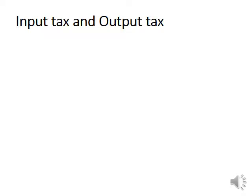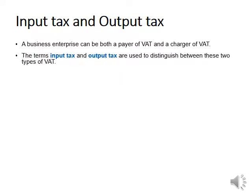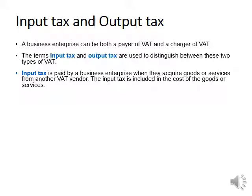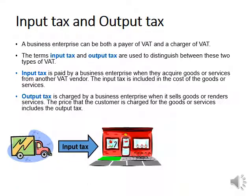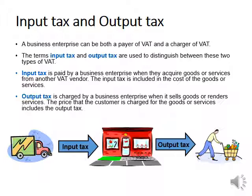That brings us to input tax and output tax. A business enterprise can be both a payer of VAT and a charger of VAT — you pay VAT when you purchase goods and charge VAT when you sell them. Input tax is paid by the business enterprise when they acquire goods or services, and it is included in the cost of those goods or services. Output tax is charged by the business enterprise when it sells goods or renders services, and it is included in the price charged to customers.